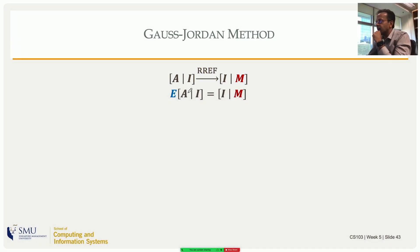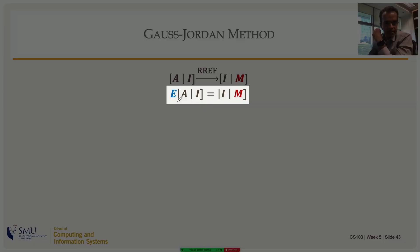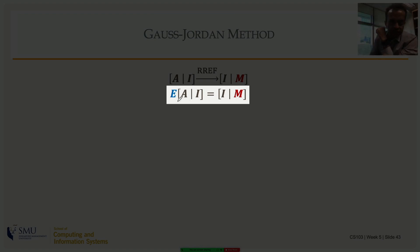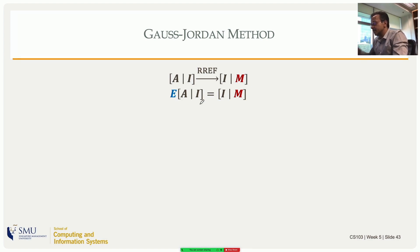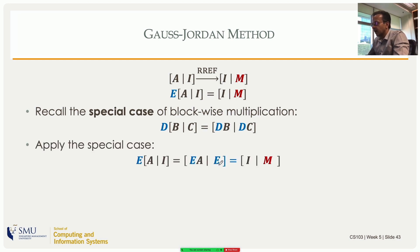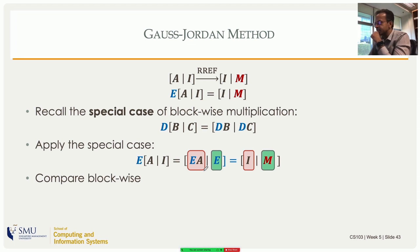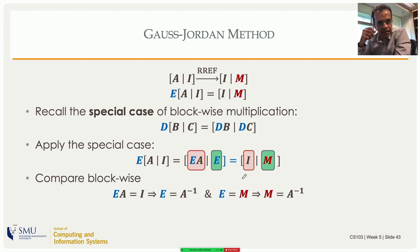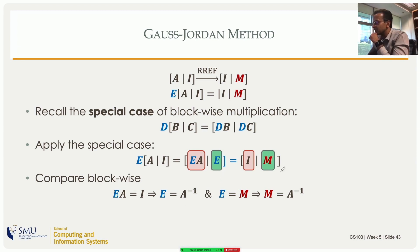Gauss-Jordan as a left multiplication by E makes it an equation: E times [A | I] equals [I | M]. Using blockwise multiplication, the left side becomes [EA | EI] = [EA | E]. Comparing block by block with [I | M]: the first block gives EA = I, meaning E must be the inverse of A. The second block gives E = M, so what sits in position M is exactly A inverse.